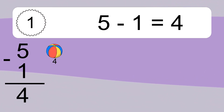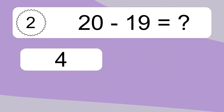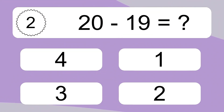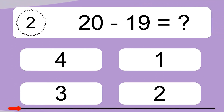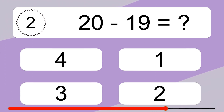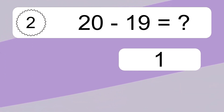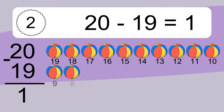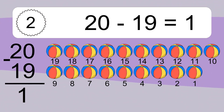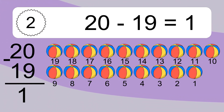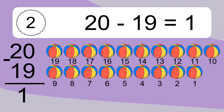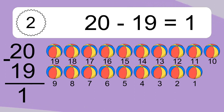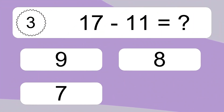Let's count it. 20 minus 19 equals what? 20 minus 19 equals 1. Let's count it: 19, 18, 17, 16, 15, 14, 13, 12, 11, 10, 9, 8, 7, 6, 5, 4, 3, 2, 1.